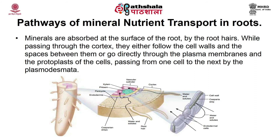Next is pathways of mineral nutrient transport in the root. Minerals are absorbed at the surface of the root by the root hairs. While passing through the cortex, they either follow the cell walls and the spaces between them, or go directly through the plasma membranes and the protoplast of the cells, passing from one cell to the next by plasmodesmata. When they reach the endodermis, their further passage through the cell wall is blocked by the Casparian strips, and they must pass through the membrane and the protoplast of endodermal cells before they can reach the xylem. Minerals are absorbed at the surface of the root mainly by the root hairs, as shown in figure 27.5.